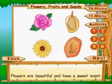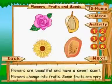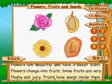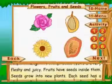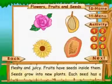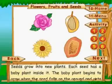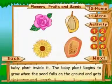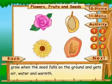Flowers, fruits and seeds. Flowers are beautiful and have a sweet scent. Flowers change into fruits. Some fruits are very fleshy and juicy. Fruits have seeds inside them. Seeds grow into new plants. Each seed has a baby plant inside it. The baby plant begins to grow when the seed falls on the ground and gets air, water and warmth.